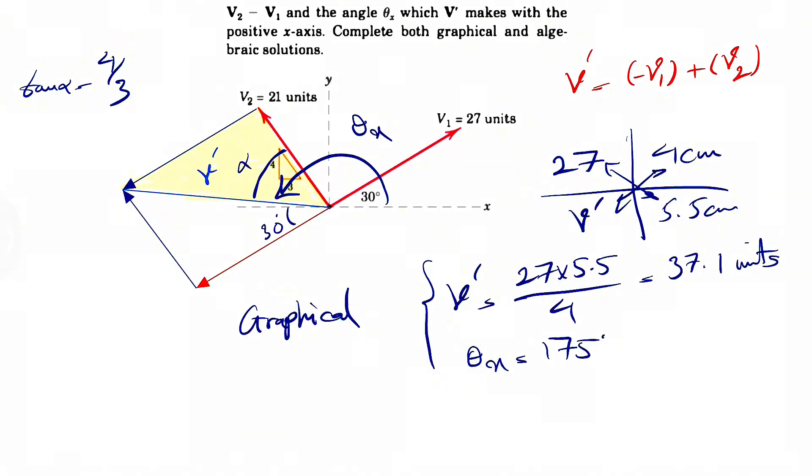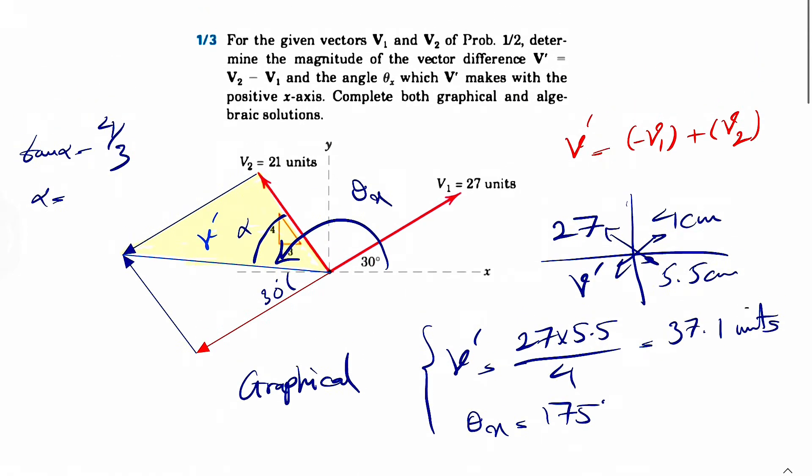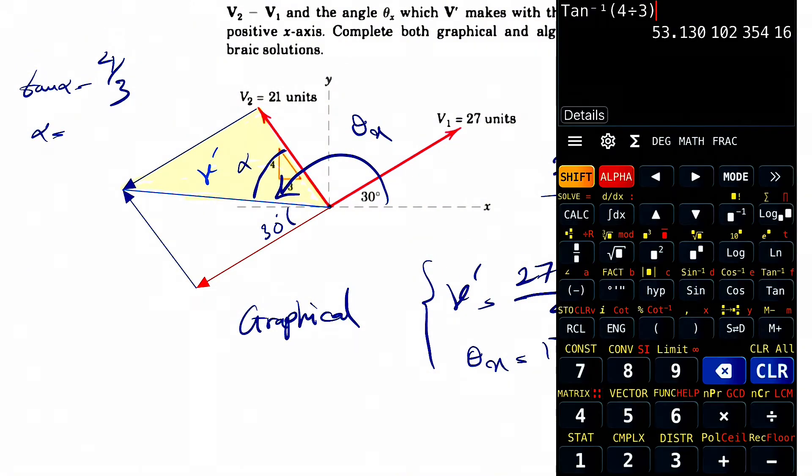We can call this one alpha. Tangent of alpha would be opposite 4 over 3. So we have that right triangle in the figure so we can find alpha: tangent inverse of 4 divided by 3, which is going to be 53.1 degrees.